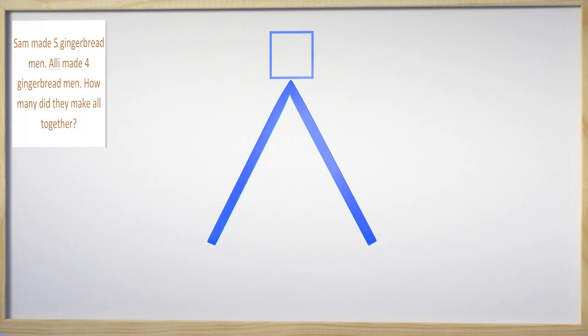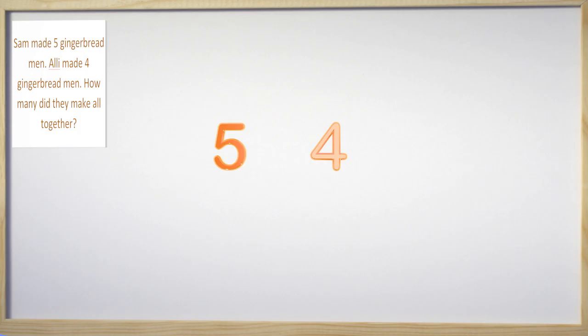What are they? Five and four. Sam had five and Allie had four gingerbread men. If we add the two partners together, we will get the total at the top of our math mountain. With this information, we can now write the equation.